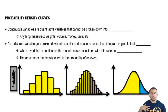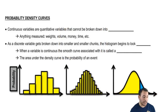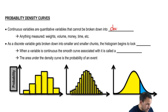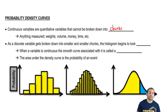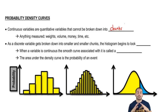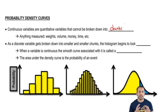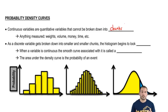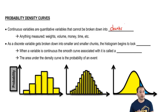So, probability density curves. Continuous variables are quantitative variables that cannot be broken down into chunks. Before, remember things like the number of babies you have — a lot of counting. Those are broken down into chunks because, for example, you can't have 1.2 babies, but you can have 1 or 2.